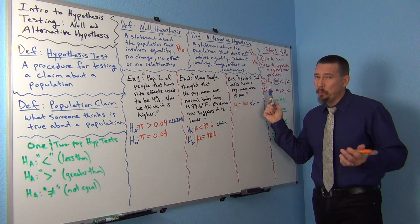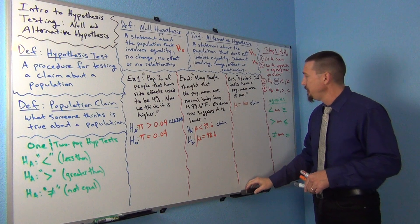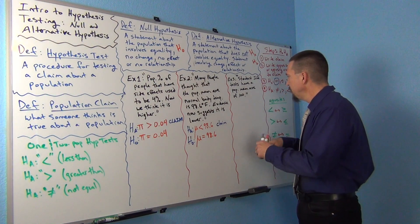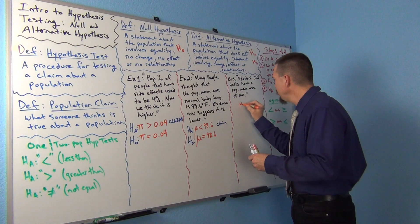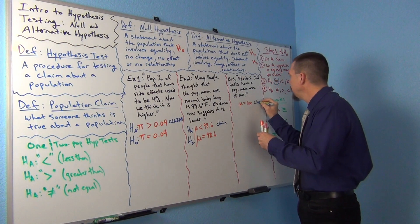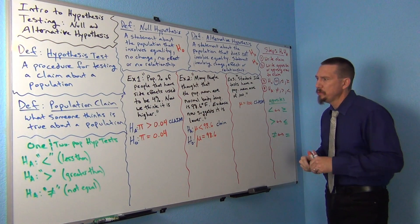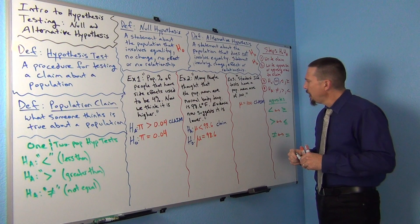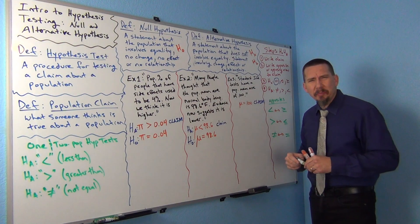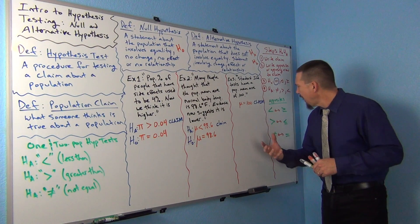This next one only had one statement: standard IQ tests have a population mean of 100, so mu is equal to 100, and that was my claim. But now I don't have the opposing view, so I have to think about opposites.